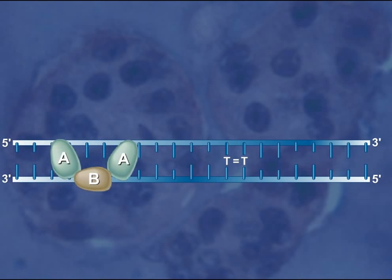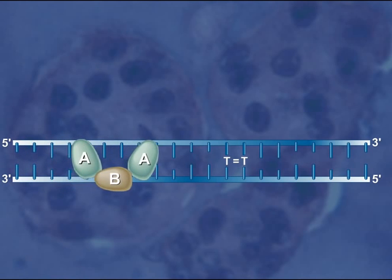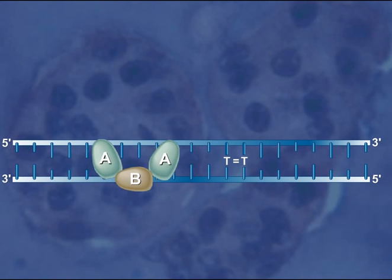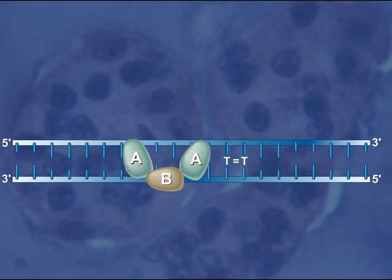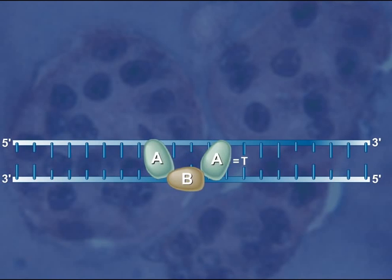This trimer moves along the DNA, scanning for damage that distorts the double helix. When the trimer encounters DNA damage such as a thymine dimer, it stops.